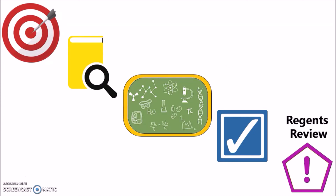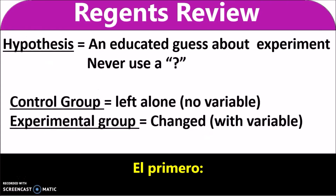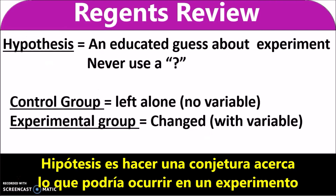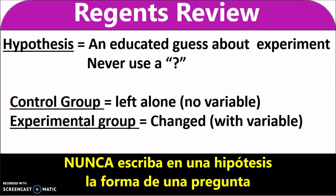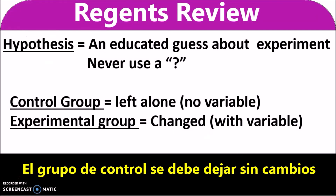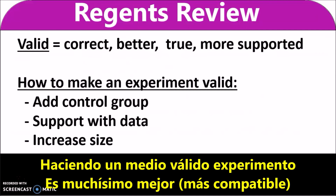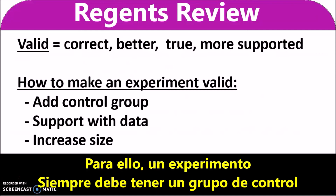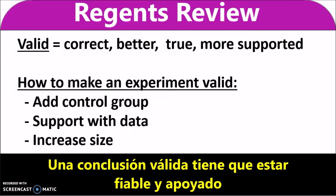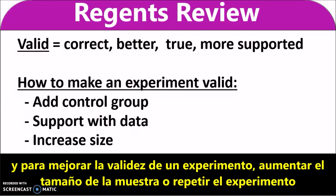The following are some things to remember specifically for the New York State Regents — these questions always come up. A hypothesis is making an educated guess about what might happen in an experiment. Never write a hypothesis in the form of a question. The control group should be left unchanged. The experimental group is where you would make changes. Making an experiment valid means making it better and more supported — an experiment must always have a control group. A valid conclusion needs to be reliable and supported. To improve the validity of an experiment, increase the sample size or repeat the experiment.